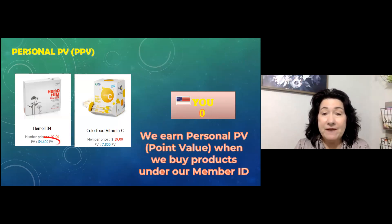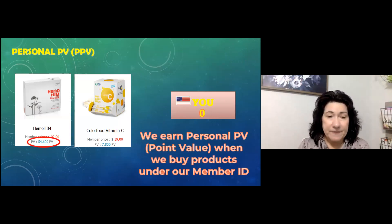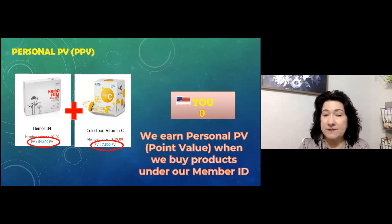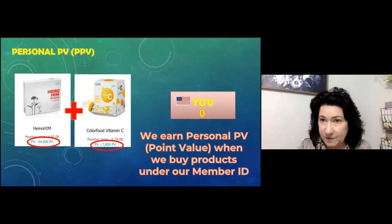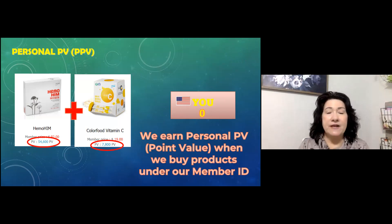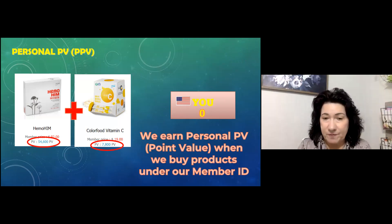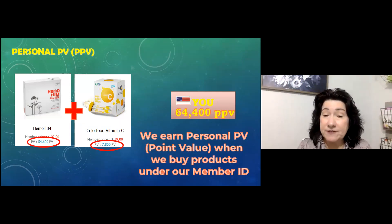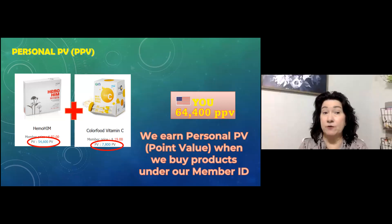For your personal PV: a box of Hemohem is 54,600 points, and a box of Vitamin C is worth 7,800 PV — and everybody should be taking our Vitamin C. If you buy both under your own member ID, you get 64,400 points for that purchase.